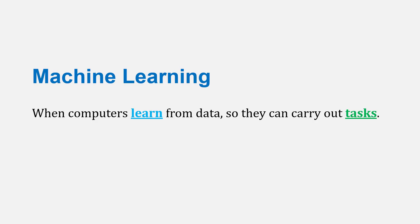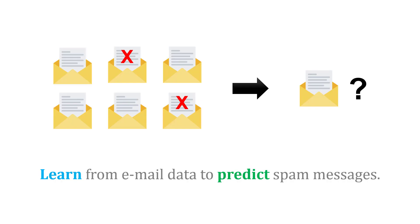Machine learning is when computers learn from data so they can carry out specific tasks. Here are two examples. First, computers could learn from email data to predict spam messages. Maybe they've had emails from the past and they've identified which ones are spam and which ones are not, and the computer learns from that to carry out the task of prediction.